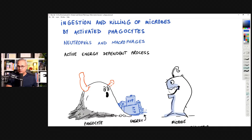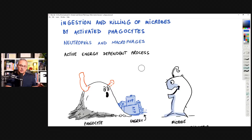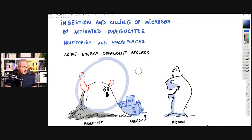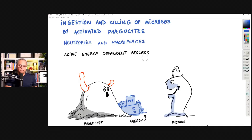That process is phagocytosis — the ingestion and killing of microbes by activated phagocytes. It's very important to say 'activated phagocytes' because cells like mast cells, macrophages, or dendritic cells are normally in a resting state. In the resting state they are not actively eating up pathogens, not releasing inflammatory markers, and not causing inflammation. Once activated, they become very rapid in picking up and eating things.